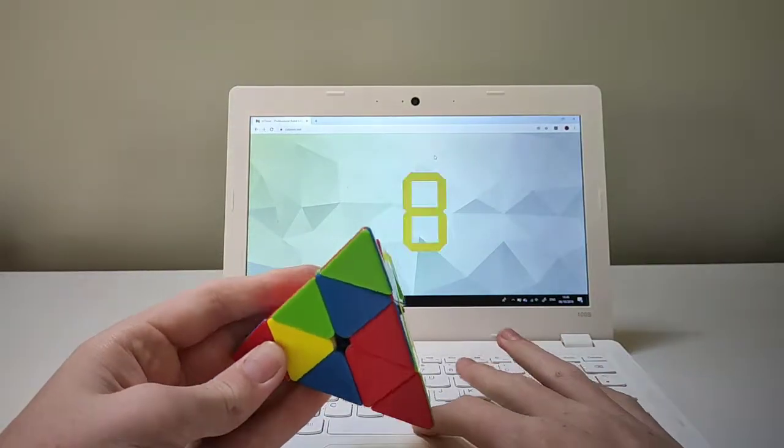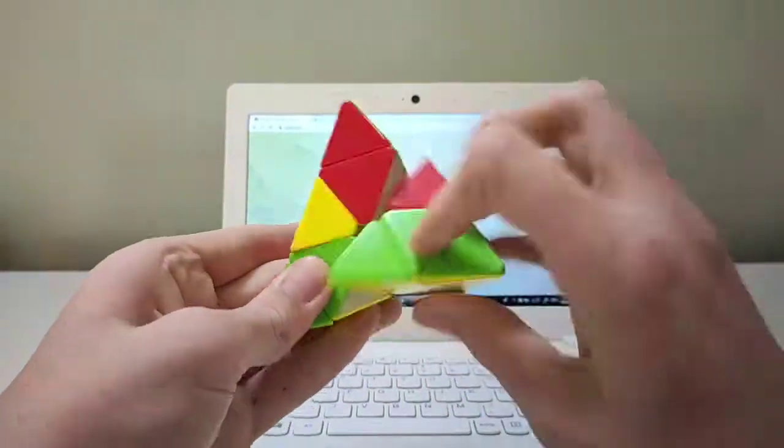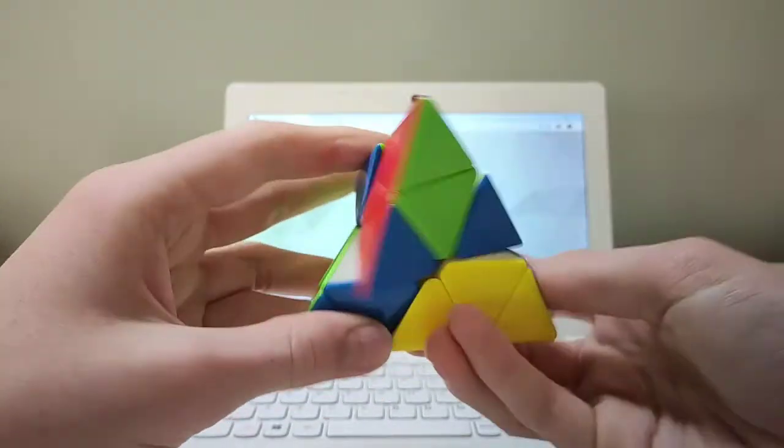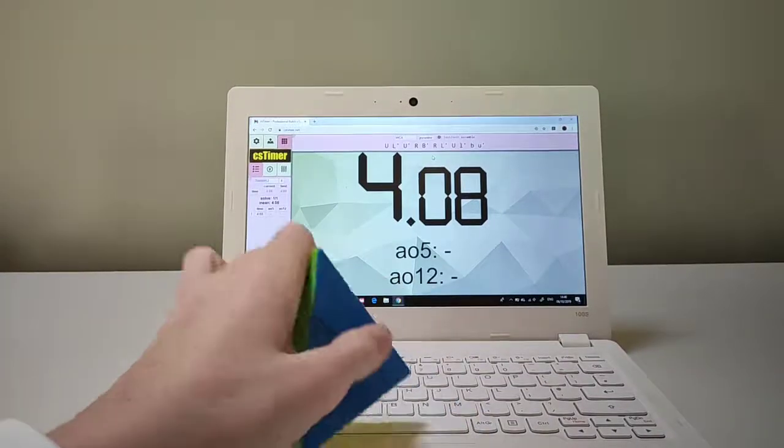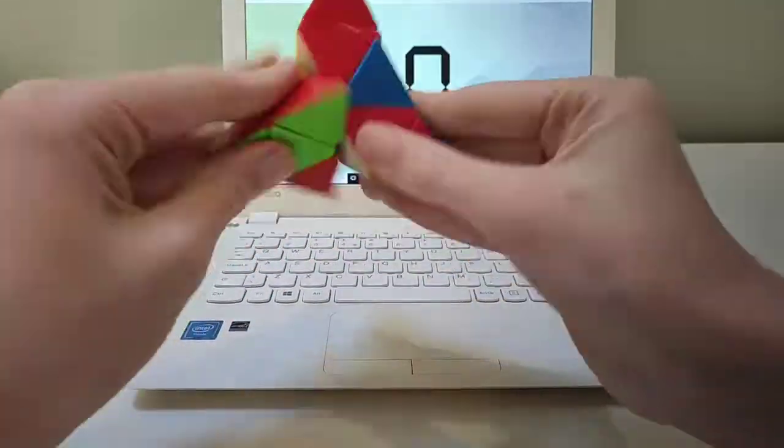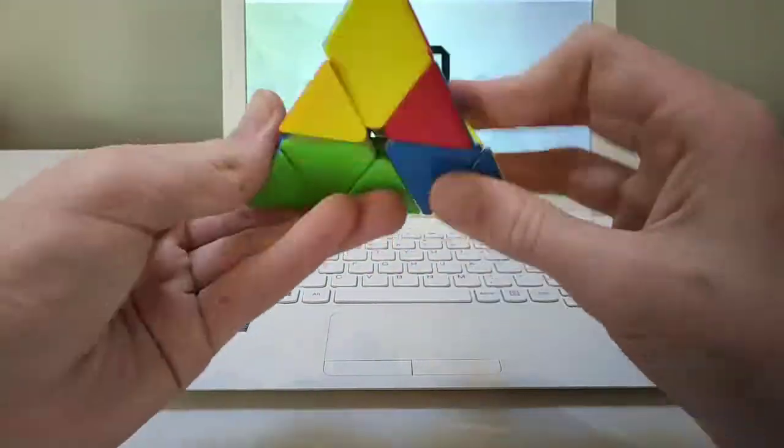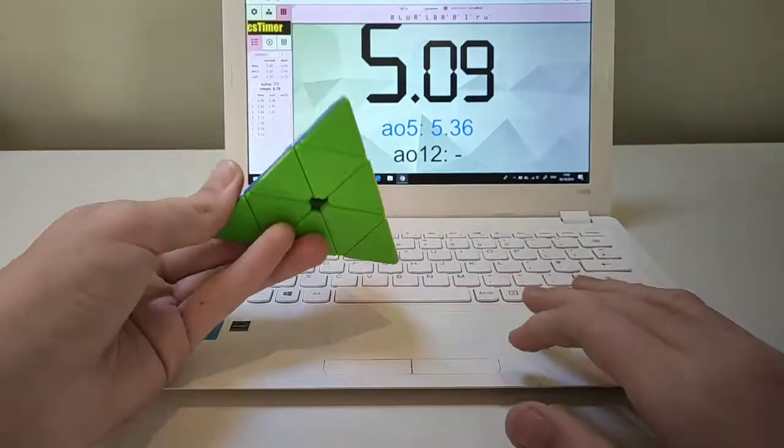The six algorithms I will show in this video are used mainly in the last four edges method. You have a V completed and one piece in the same layer as the V, flipped but in the correct place. You must hold this piece to your front for all six cases.